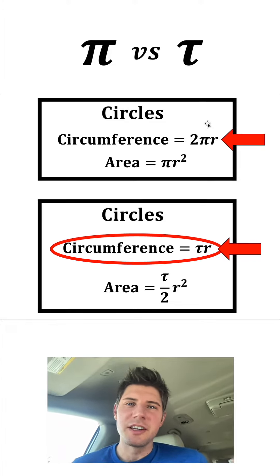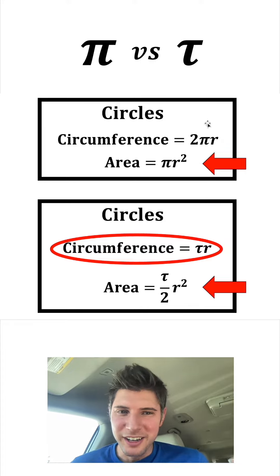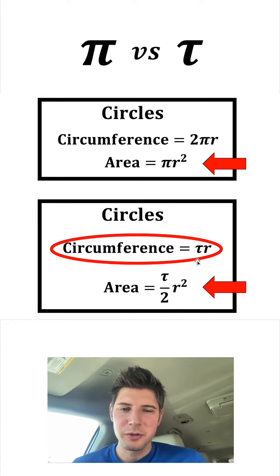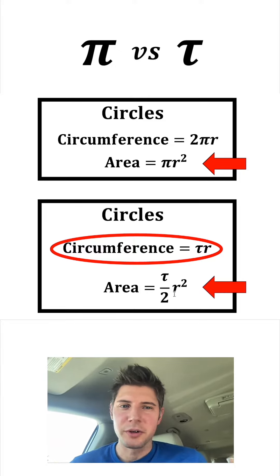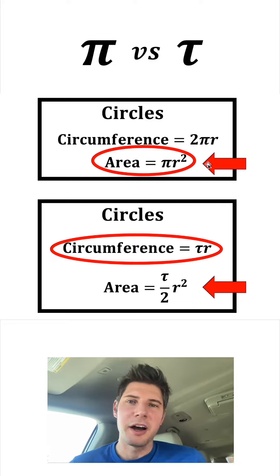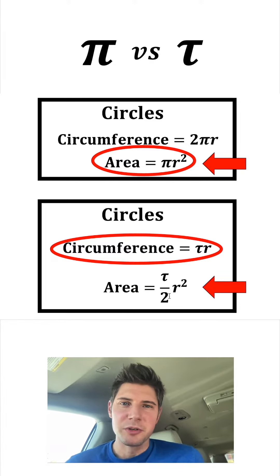If we had to choose, maybe we could say tau wins. But when we look at the area, we have πr² or τ/2 r². I think that the πr² is way simpler than τ/2 r². So I would say in terms of area, pi wins. I do think this divided by two is kind of annoying.